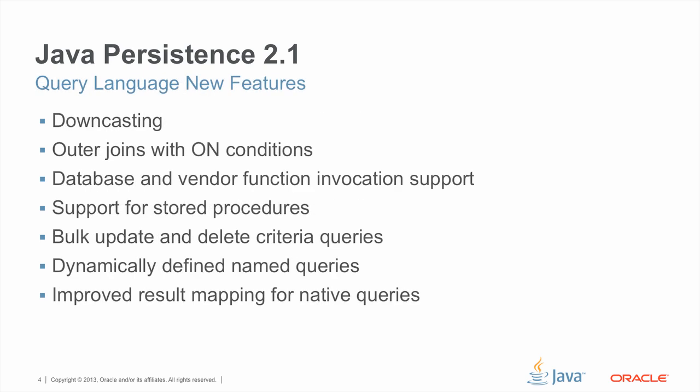In terms of the new query language features, we've added support for downcasting, which I'll be discussing in more detail shortly. Outer joins with on conditions — we added on condition support to outer joins, which you did not have in 2.0, and which is obviously a very useful feature. We've added support for the standard invocation of both functions that are in the database themselves, as well as persistence provider specific functions that you can address in queries. We've also added standardized support for the invocation of stored procedures.